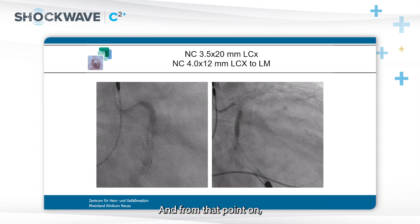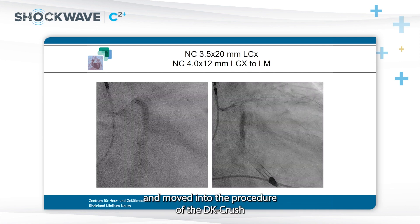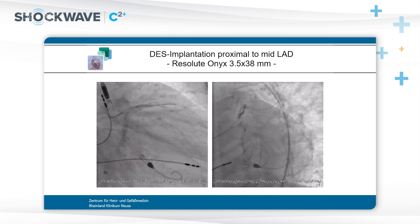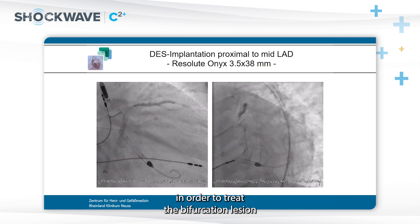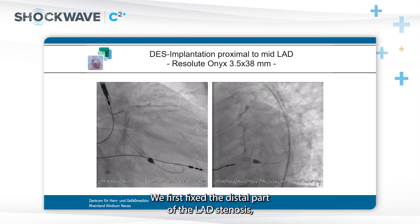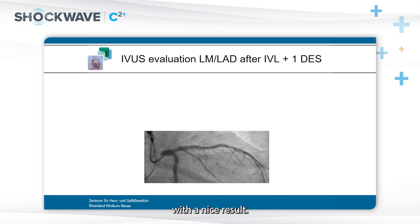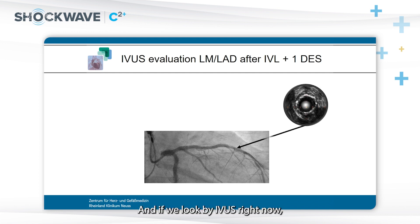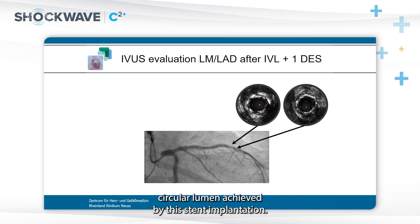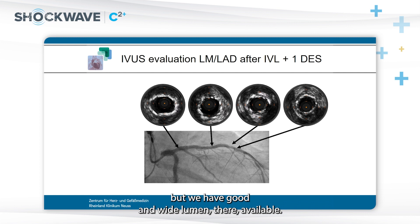From that point on, we started again with post-dilatation using a non-compliant balloon and moved into the DK-Crush procedure to treat the bifurcation lesion of left main, proximal LAD, and proximal circumflex. We first fixed the distal LAD stenosis with a 3.5 mm, 38 mm long stent with a nice result. IVUS confirms a nice open circular lumen achieved by the stent implantation, with good and wide lumen in the proximal part.